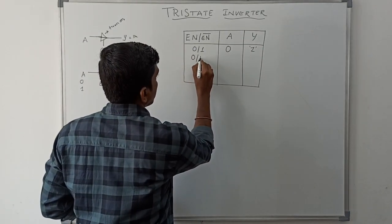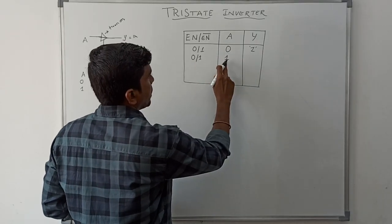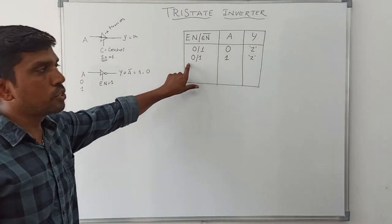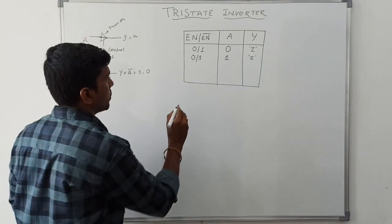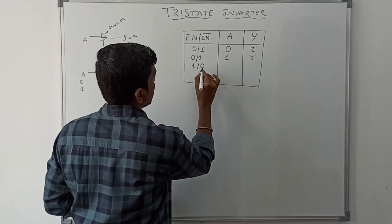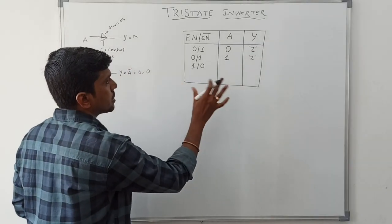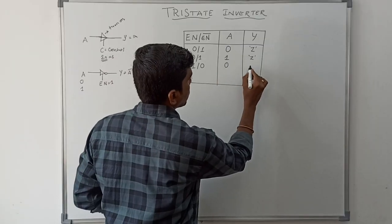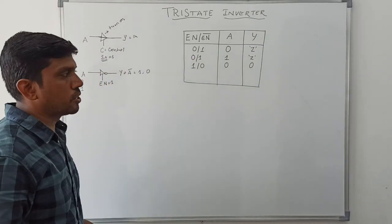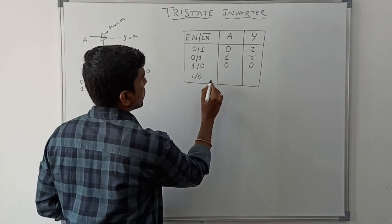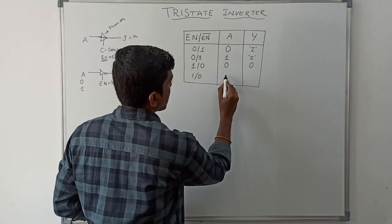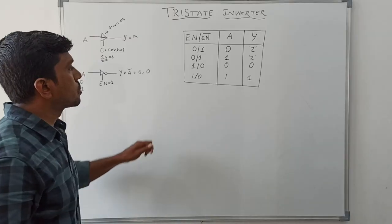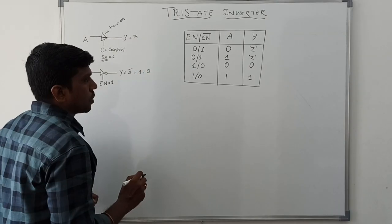When enable equals zero and enable bar equals one, and input is A, the output is Z because enable is zero and the device is off. When enable equals one and enable bar equals zero, the device turns on. Whatever value is present on A is transferred to output: if A equals zero, output is zero; if A equals one, output is one. This is the complete truth table for the tri-state buffer.